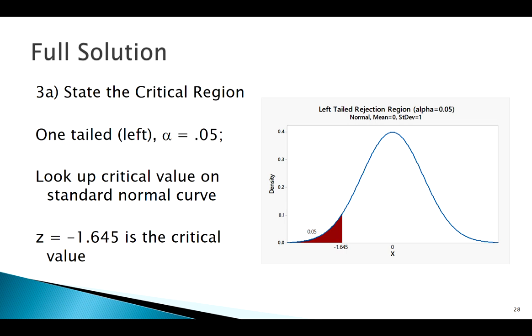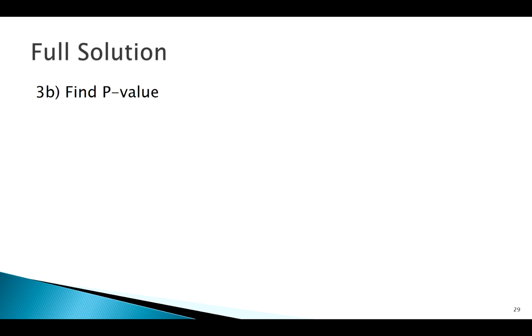Here's what my rejection region looks like. I could make a decision at this point, but we also want to go with our p-value method. So let's find our p-value.